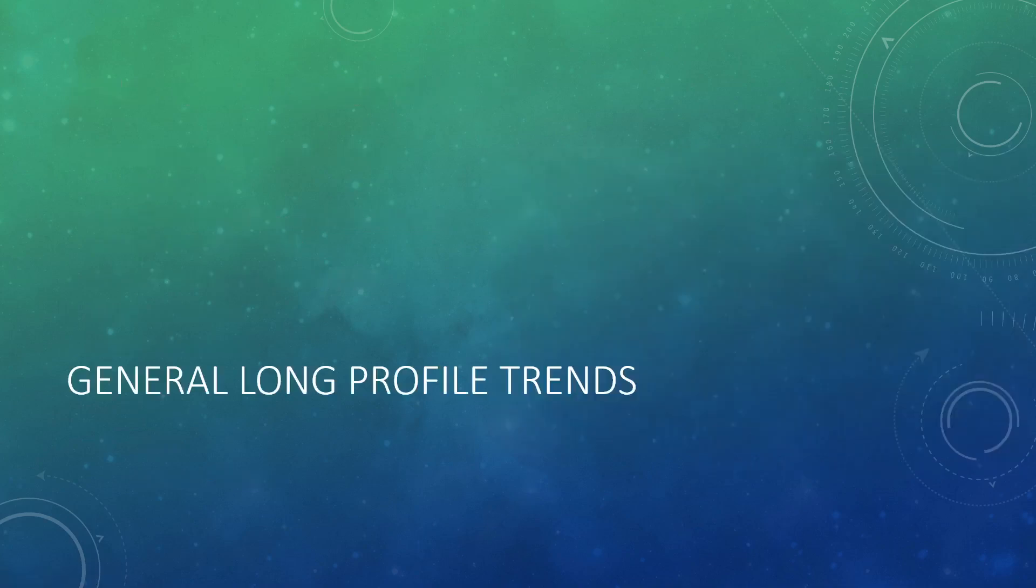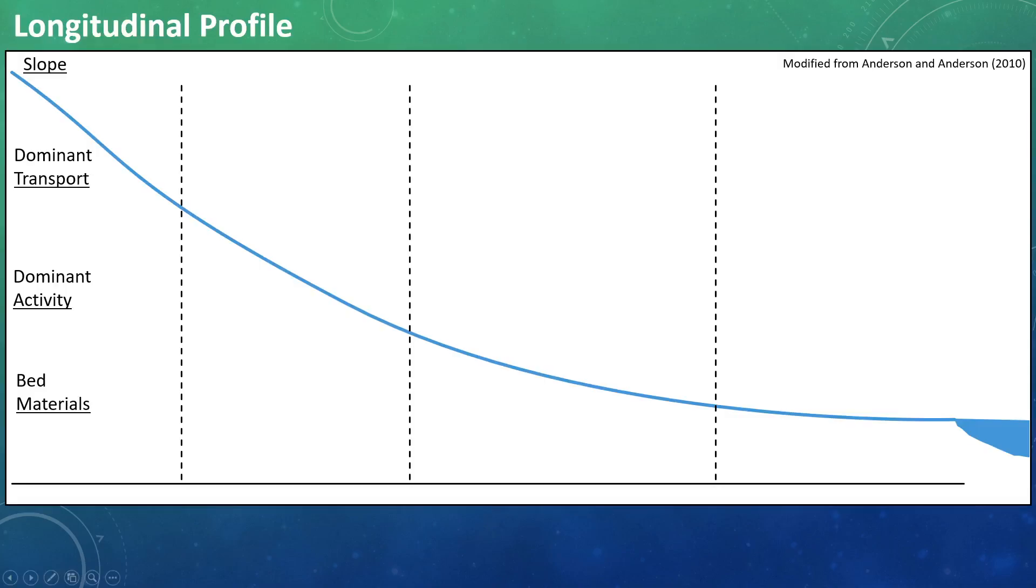So, let's look at some general trends that we can assume with most alluvial rivers and ideal systems. We're going to look at a few different factors and discuss how they change throughout the river, from the headwaters first down to the mouth, including slope, dominant method of transport, dominant activity in each reach, the typical bed materials, and finally how each of these reaches looks in a cross-sectional view and in some imagery.